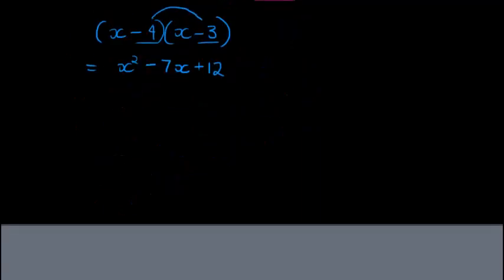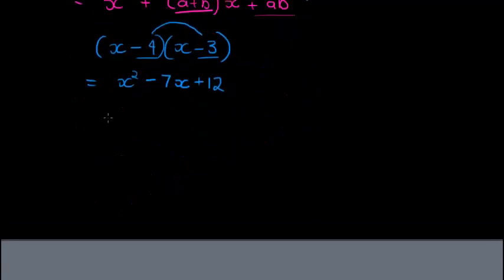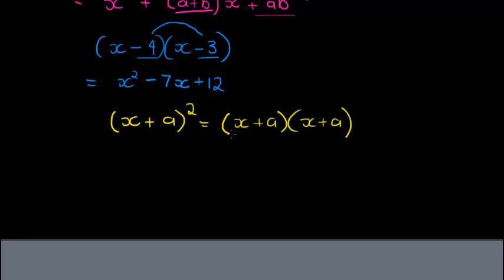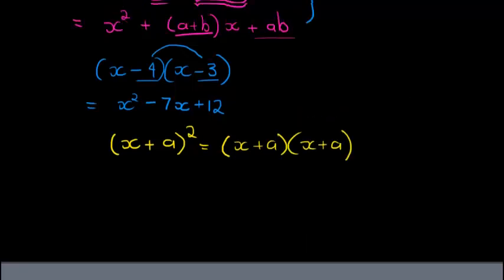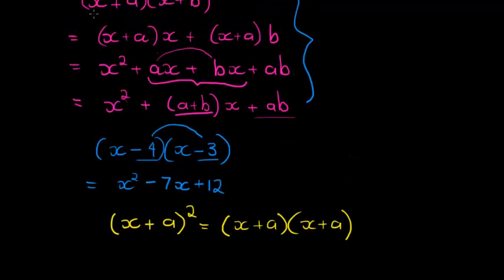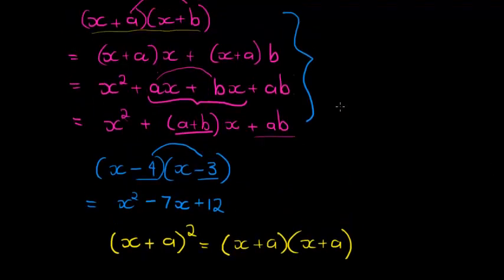Now one more last thing that I would like to show you. And that is, what if I have (x+a) squared? What if I have a binomial and the whole binomial has an exponent? Well, remember what that means. That means the whole binomial is multiplying itself. So I have (x+a), that is multiplying (x+a). Now again, it's got the same format as up here. The only difference is, only difference is instead of having a b, we just have another a.